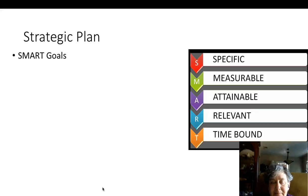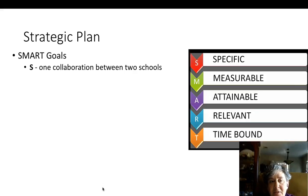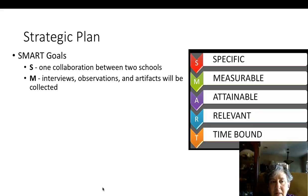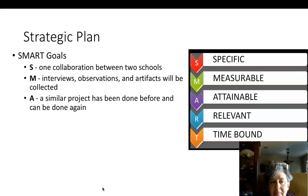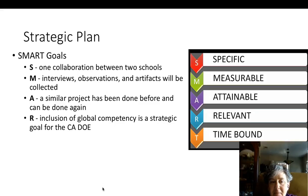It's a strategic plan. SMART goals are specific, measurable, attainable, relevant, and time-bounded. Specifically, this collaboration is a single collaboration between two schools. It's measurable in that interviews, observations, and artifacts can be collected. It's attainable as a similar project has been done in the spring and thus can be done again. It's relevant because the inclusion of global competency is a strategic goal for the California Department of Education, and thus is timely. And it's time-bounded in that this collaboration will take place within the course of a single semester.